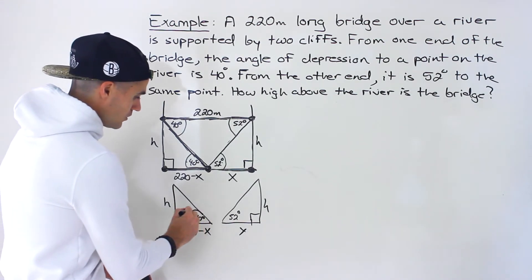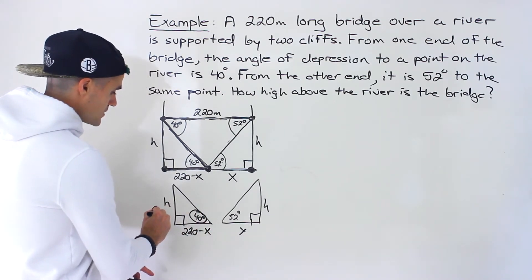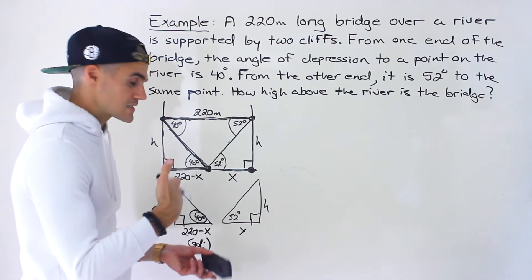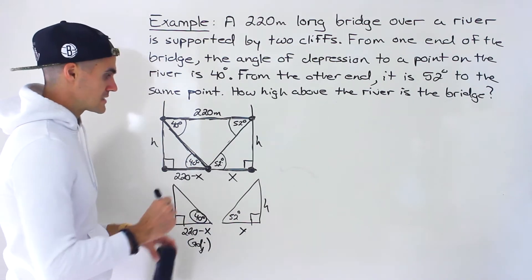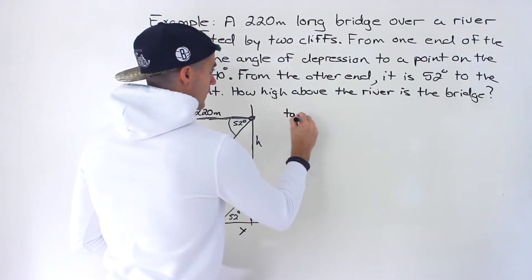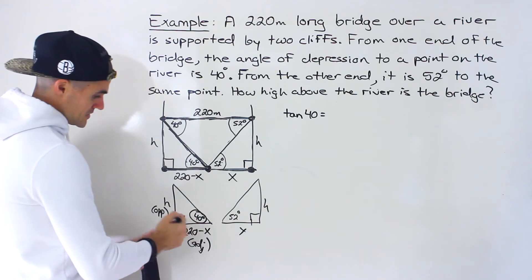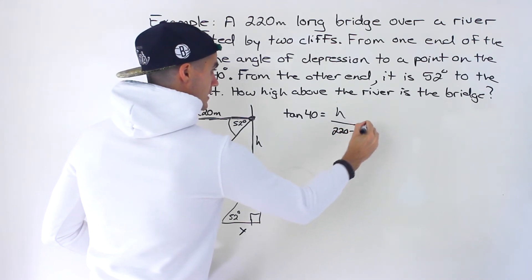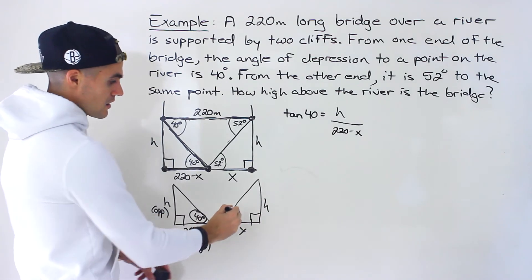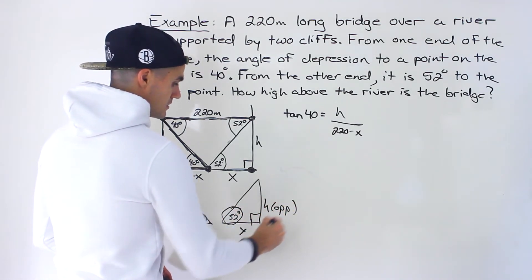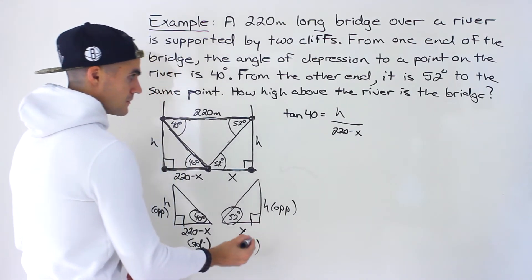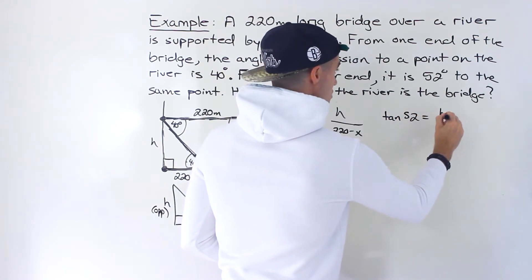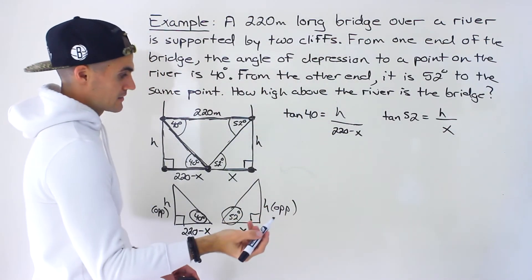Looking at the first triangle with the 40-degree angle: H is the opposite side and 220 minus X is the adjacent side. The ratio that deals with opposite and adjacent is tangent, so: tan(40°) = H / (220 − X). Then for the second triangle with 52 degrees: H is opposite and X is adjacent, so: tan(52°) = H / X.